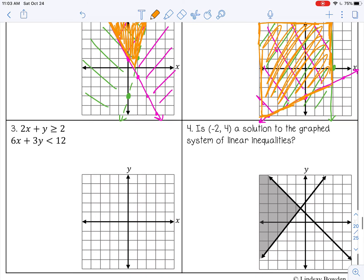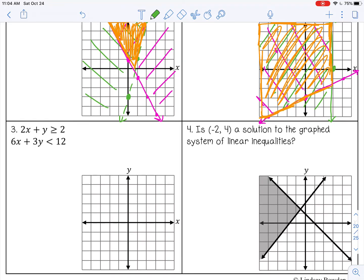Alright, next, both of these on number 3 are in standard form. You want to change them to slope intercept form for inequalities to make sure that you shade the right way. So the first one, let's see, 2x plus y equals 2, or is greater than or equal to 2. I want to move that 2x to the other side. So I subtract 2x.